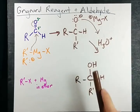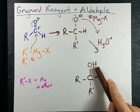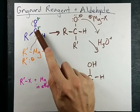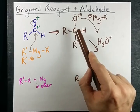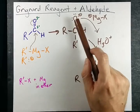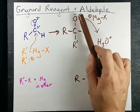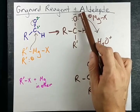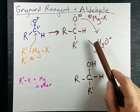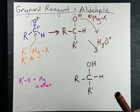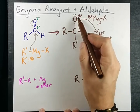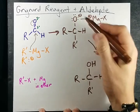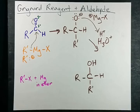Reacting a Grignard with an aldehyde makes a secondary alcohol because the Grignard attacks the carbonyl carbon, gives you a secondary alcohol deprotonated or an O minus. And then you convert that to OH just by mixing with aqueous acid. Minus loves plus. And it attacks and makes the alcohol. It's pretty straightforward.